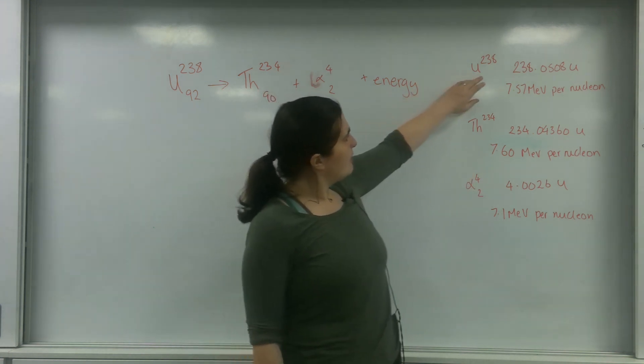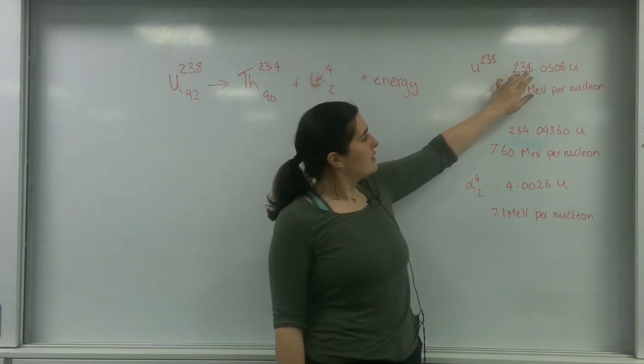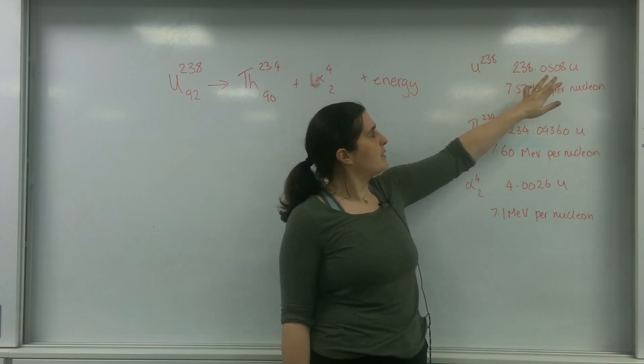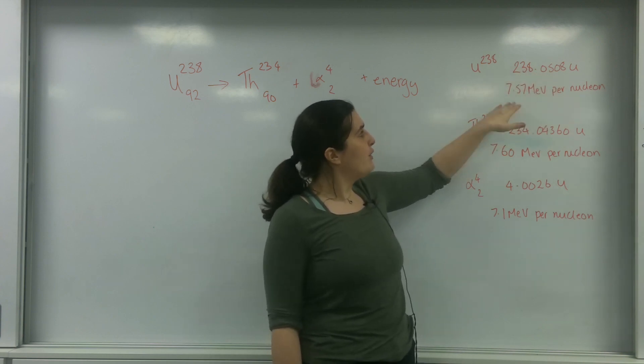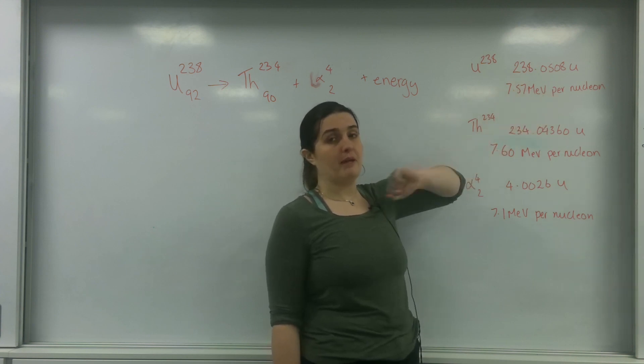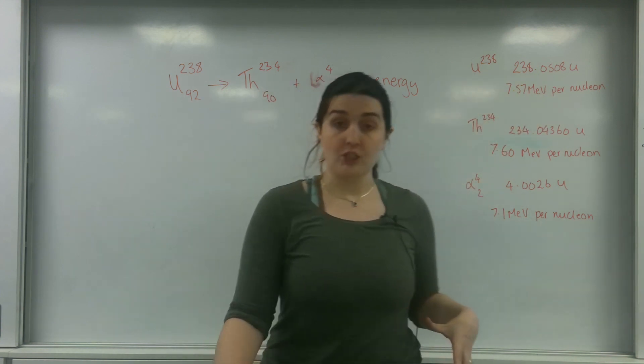Here I've got uranium-238 with an atomic mass unit of 238.0508U and per nucleon has 7.57 MeV per nucleon. I've done that for every set of information.